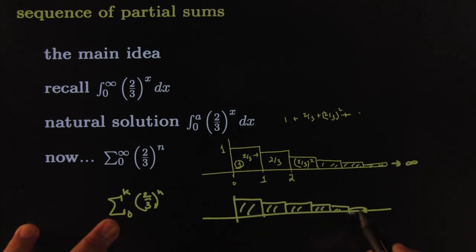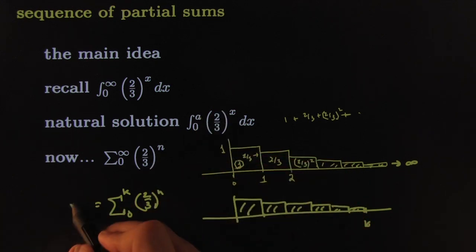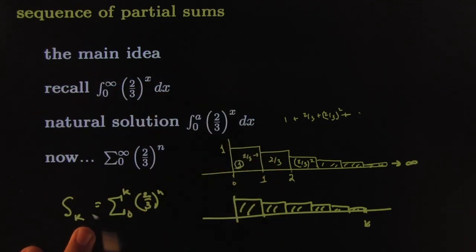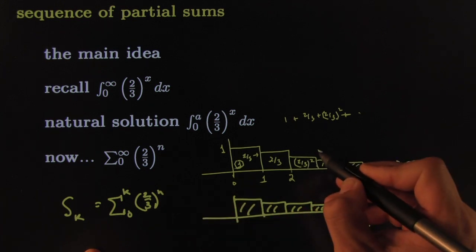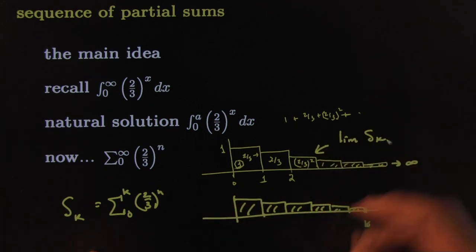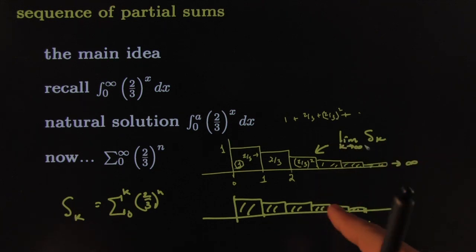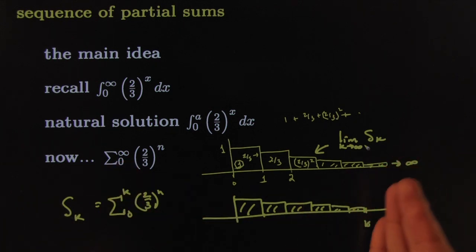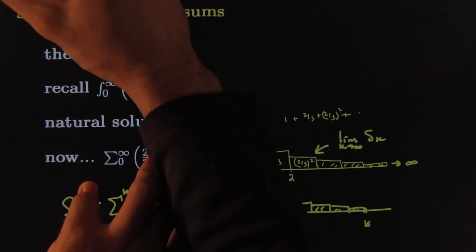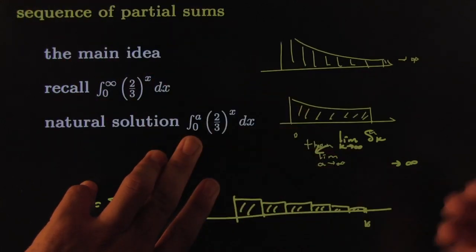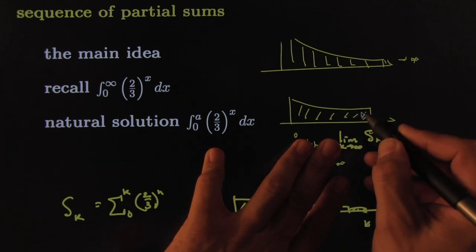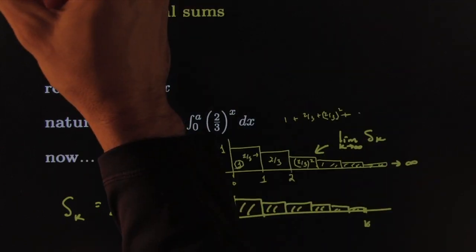This partial sum — stopping at k — is analogous to integrating from 0 to a. To get the full infinite sum, we take the limit of the partial sums as k goes to infinity. We never called the integral version a 'partial integral,' but by analogy that's exactly what it was. The concept is the same: do part of it, then take a limit.